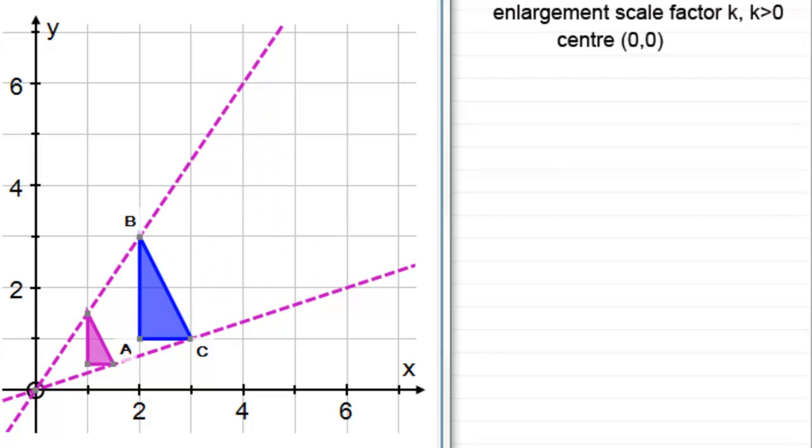So how do we compile any matrix then which will give us an enlargement of a positive scale factor k centered at the origin? Well, if you've been watching videos in this series, you'll remember that we build this up from looking at what we call the unit base vectors.